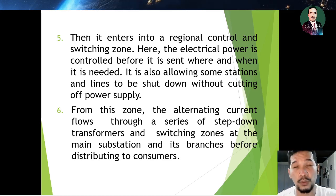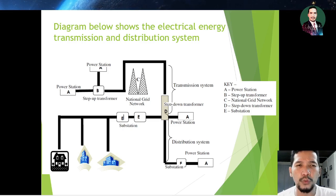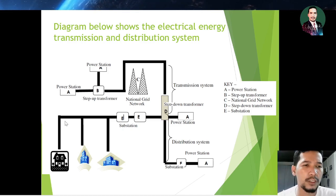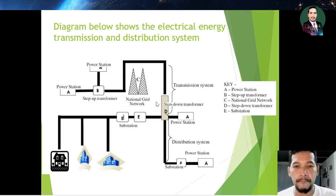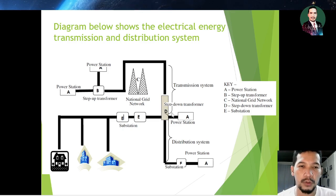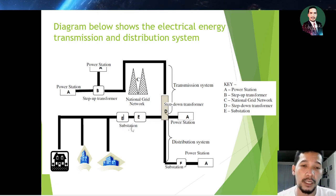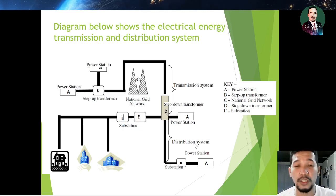This diagram shows the electrical energy transmission and distribution system. Label A represents the power station, followed by B, the step-up transformers. The transmission system uses the national grid network, labeled C. From C we also have D, the step-down transformers, then the substation, and finally distribution to consumers.